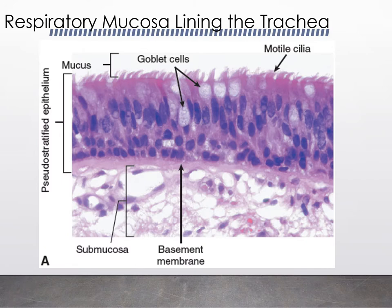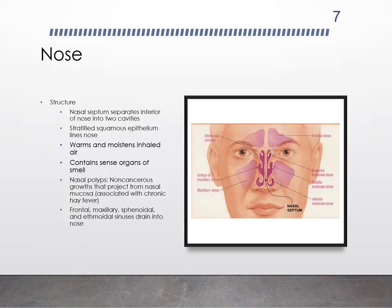Here's an image of those goblet cells within the ciliated pseudostratified epithelium, which is an image we've seen before. Air enters the nose or oral cavity, where it is warmed and humidified. However, we also lose water during expiration at about 17.5 milliliters per hour, which increases to four times that when we're exercising.